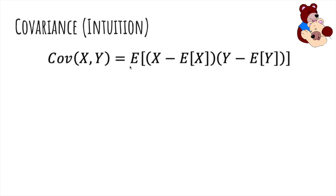So this is the definition of covariance. If X is greater than its average and Y is greater than its average, then we get a positive term times a positive term, which is positive. If X is below its mean and Y is below its mean, then we get a negative times a negative, which is also positive.